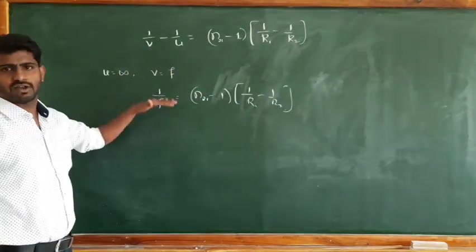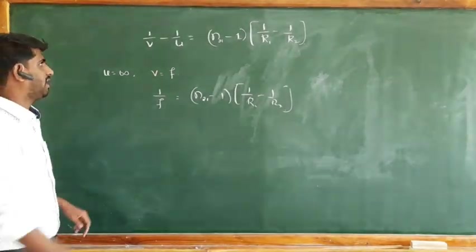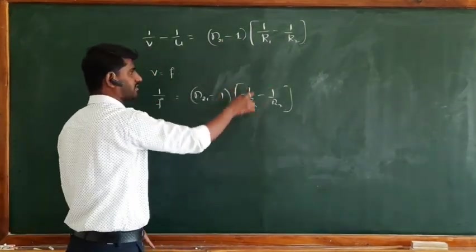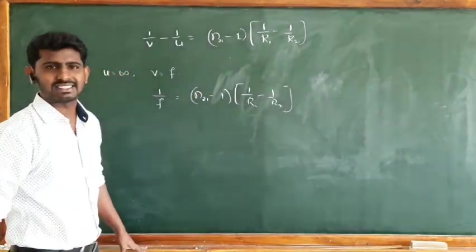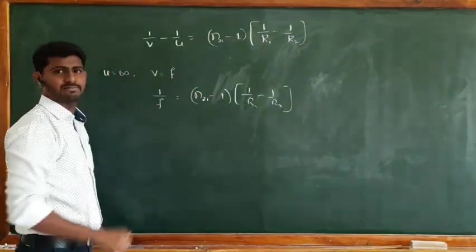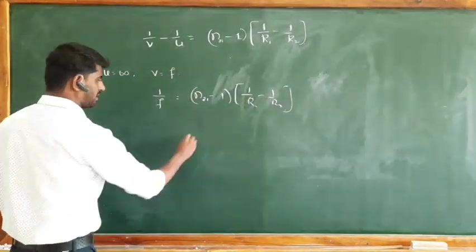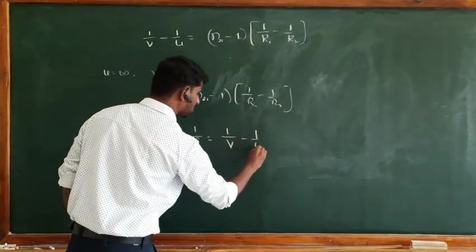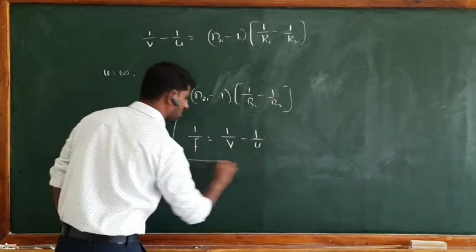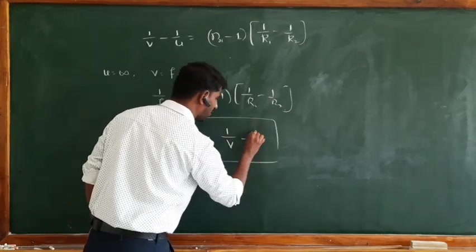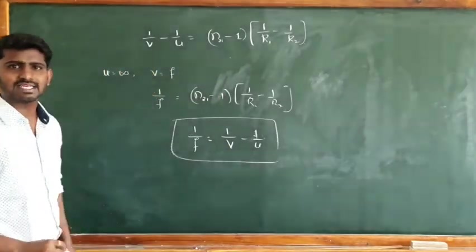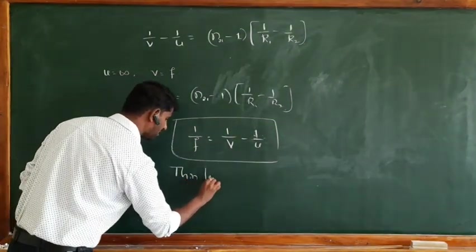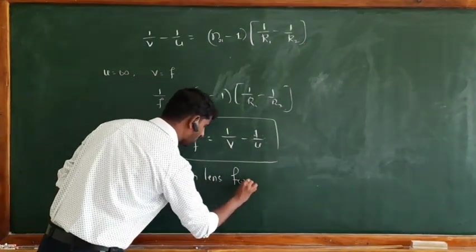This is the derivation from the last class. You can see the RHS of both equations are the same, so the LHS must be the same too. The final conclusion is 1/F is equal to 1/v minus 1/u. This important relation is called the thin lens formula.